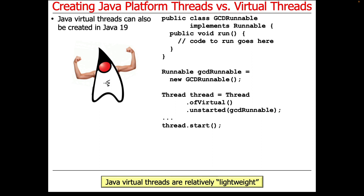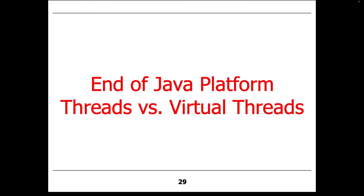Keep in mind that the fork-join carrier thread approach is the current implementation — don't be surprised if this changes in future Java releases from an implementation point of view. But the ideas and concepts of platform threads and virtual threads will perpetuate over time. That's the end of the overview of Java platform threads versus Java virtual threads.